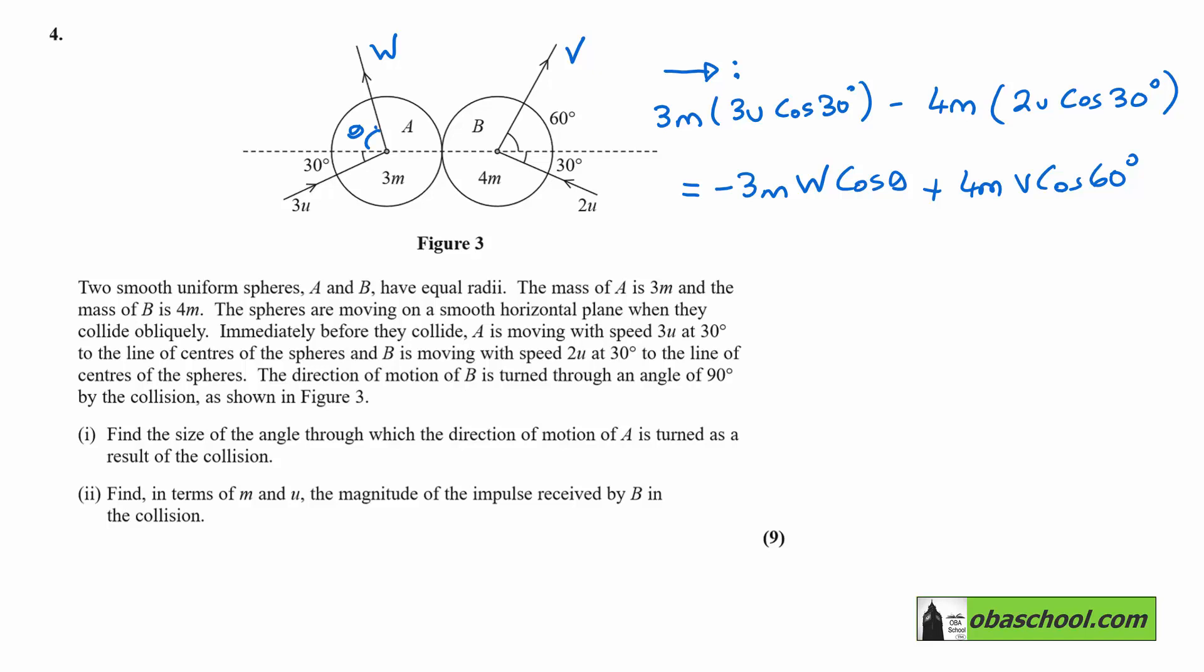So what do we get here? 9M u root 3 on 2. Take away 4M u root 3 is equal to 2M v. Take away 3M w cos theta.